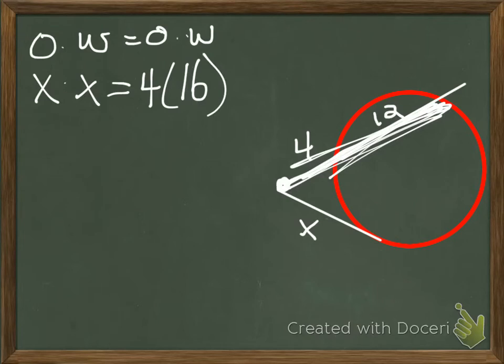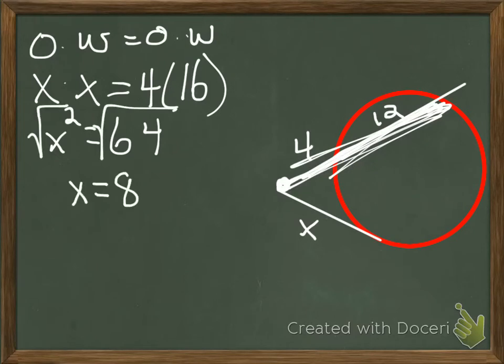Now x times x we know is x squared and that equals 4 times 16 is 64. Now to get rid of that x squared, I've got to take the square root of both sides. That gives me x equals 8. So my answer, the length of the tangent line is 8.